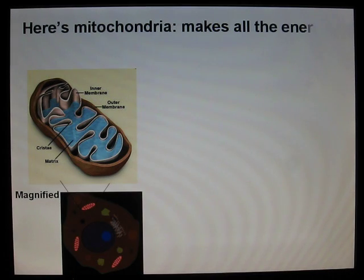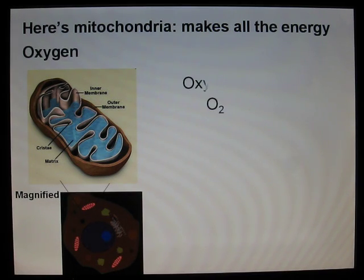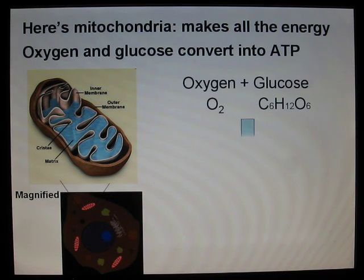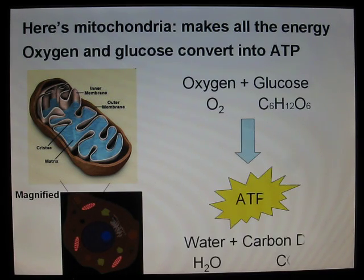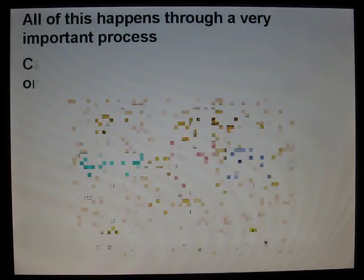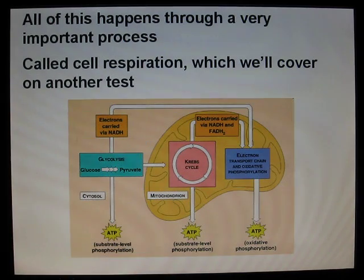Here's mitochondria — makes all the energy. Oxygen and glucose convert into ATP. All of this happens through a very important process called cellular respiration, which we'll cover on another test.